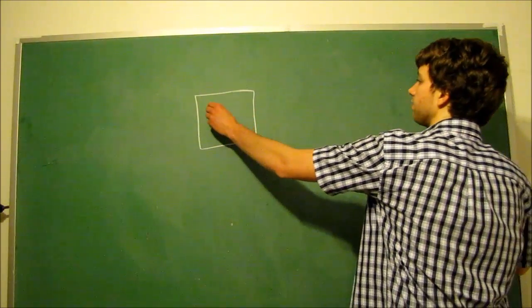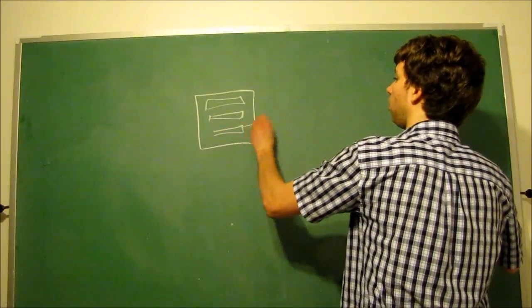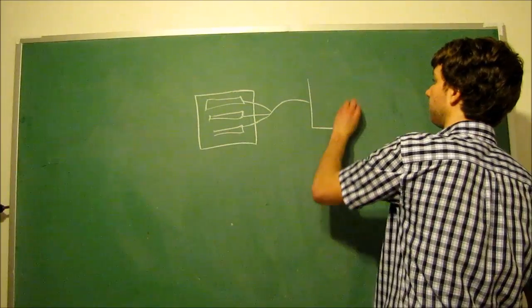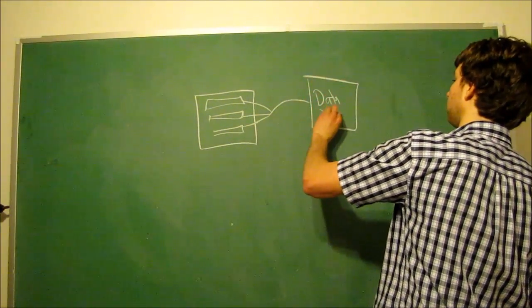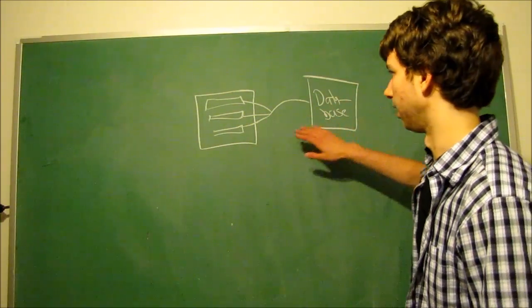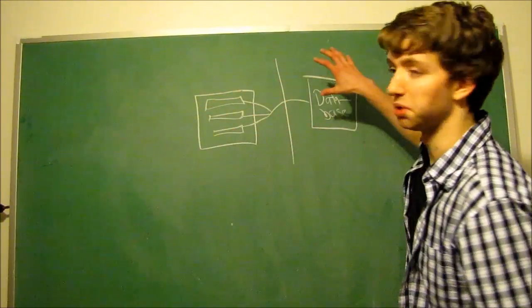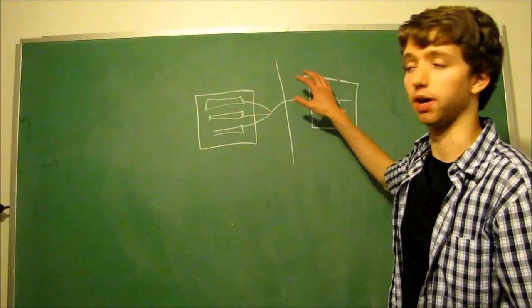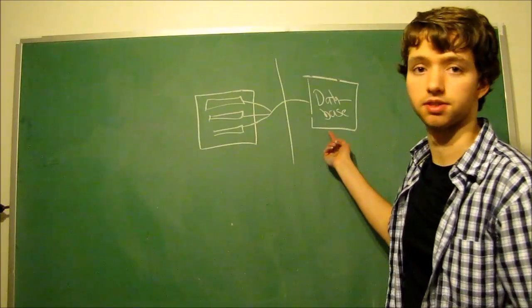That's because all of this information that you put in when you registered, well, all of these values are given to a database. So here you can say is our database. Sorry for my craptastic handwriting, but don't even worry about it. This is what's said to be the front end. This is said to be the backend. That's because we don't necessarily see what's going on back here. We can put in our email, our username, and our password, and it can get stored in this database.